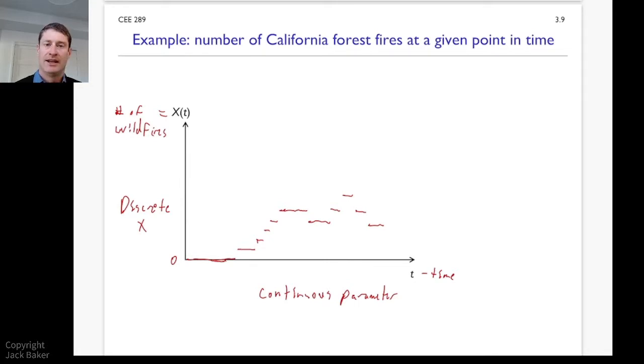For a lot of our stochastic processes, we'll do t is time, continuously varying. And then the X could be discrete or continuous. We'll do some examples with both of those in the class. But just to show that there is a full set of all four combinations that are possible.